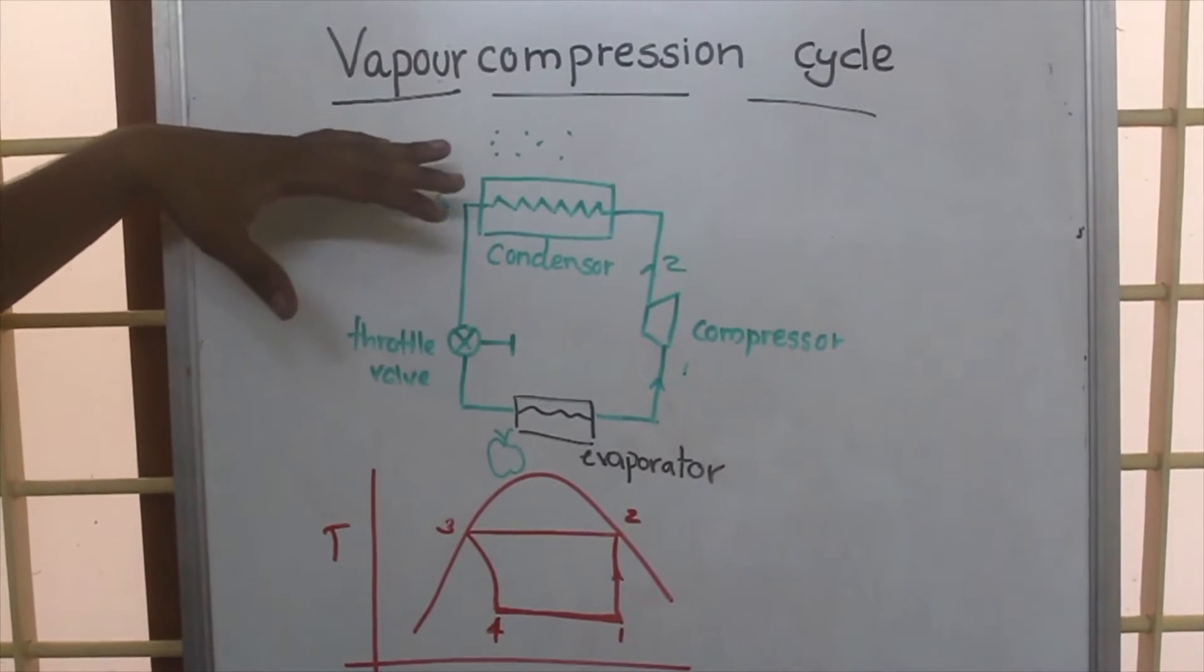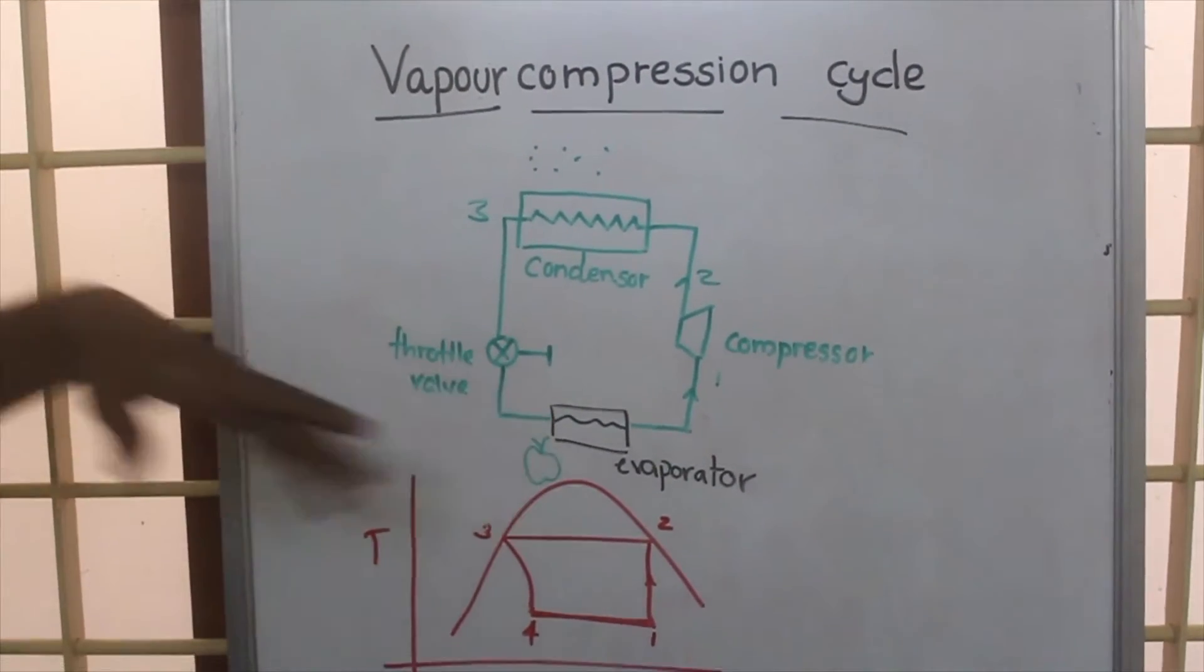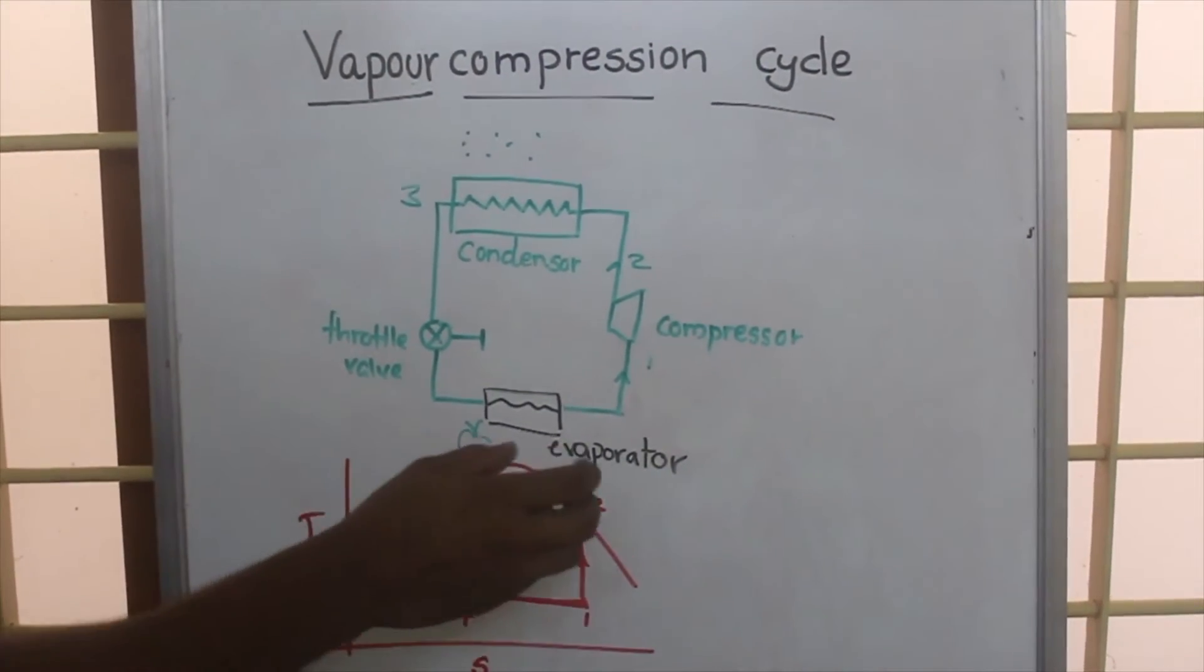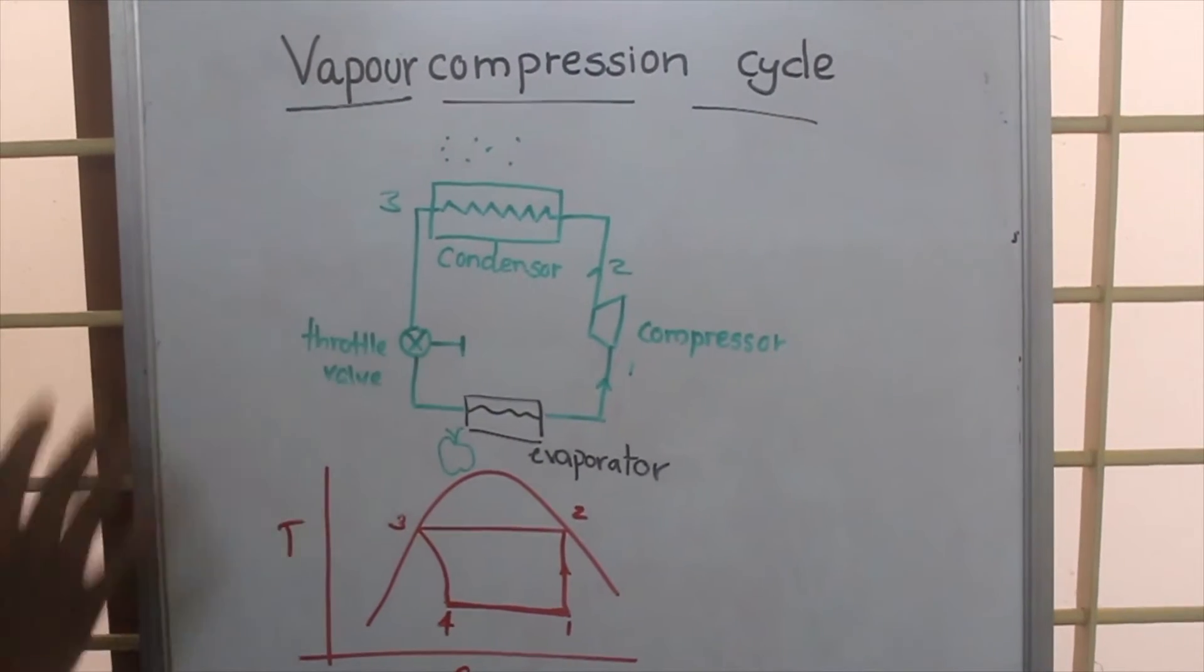Let's look into the vapor compression cycle and basic refrigeration system. In the refrigeration system there is an evaporator, compressor, condenser, and throttle valve.